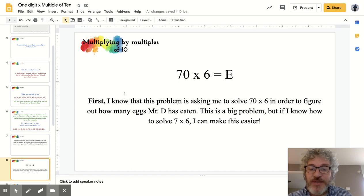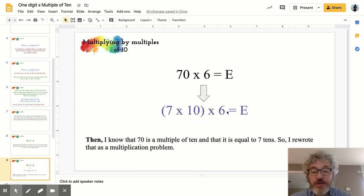So basically this equation that goes with this question is 70 times 6. And that gives us our answer. First, I know that the problem has asked me to solve 70 times 6 in order to figure out how many eggs Mr. DeHaan has eaten. That is a large number. But if I know how to solve 7 groups of 6 or 7 times 6, I can make this problem easier for myself. So here's how I do this.